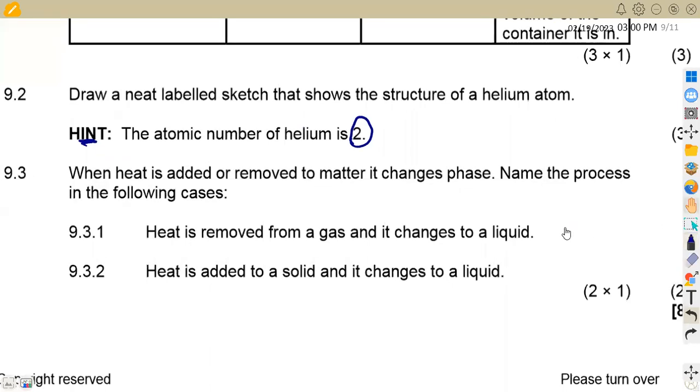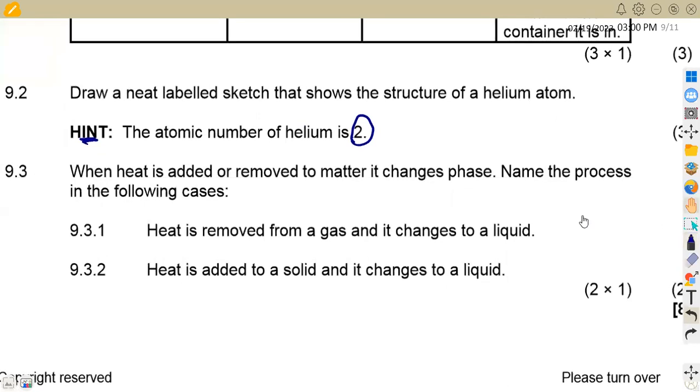On 9.3, we are given that when heat is added or removed to matter, it changes phase. Name the process in the following cases. 9.3.1, heat is removed from a gas and it changes to liquid.